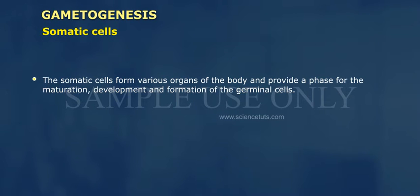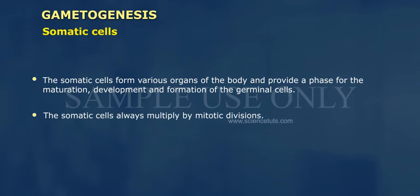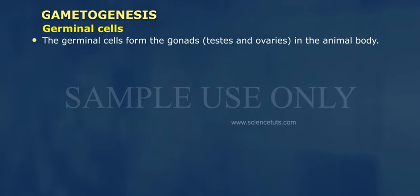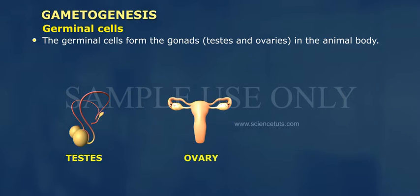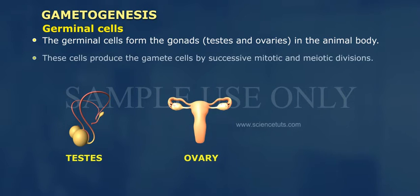The somatic cells form various organs of the body and provide a phase for the maturation, development and formation of the germinal cells. The somatic cells always multiply by mitotic divisions. The germinal cells form the gonads, testes and ovaries in the animal body. These cells produce the gamete cells by successive mitotic and meiotic divisions.